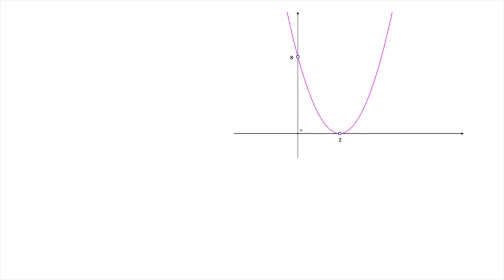Since we know that this is a parabola, it must have an equation that can be written as y equals ax squared plus bx plus c. Our objective here is to find this equation — in other words, we need to find the values of a, b, and c. And to do that, we're going to use root factoring.